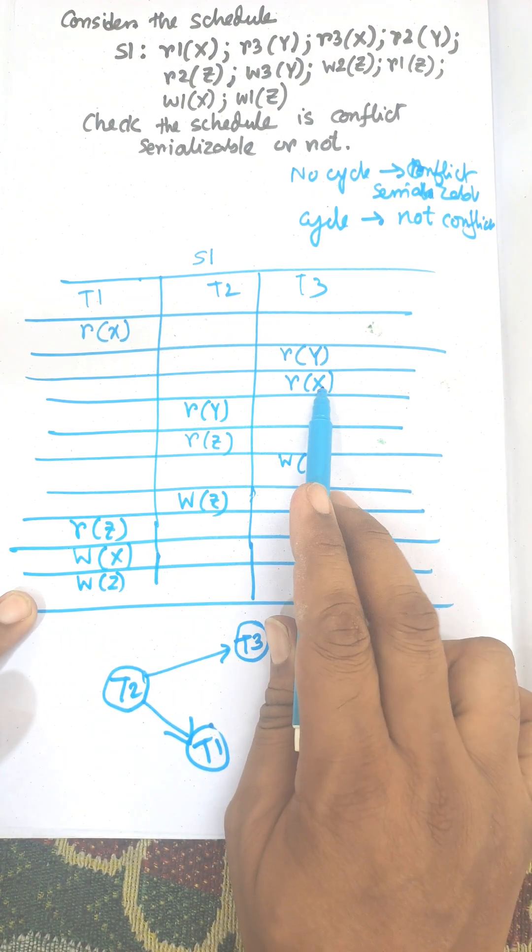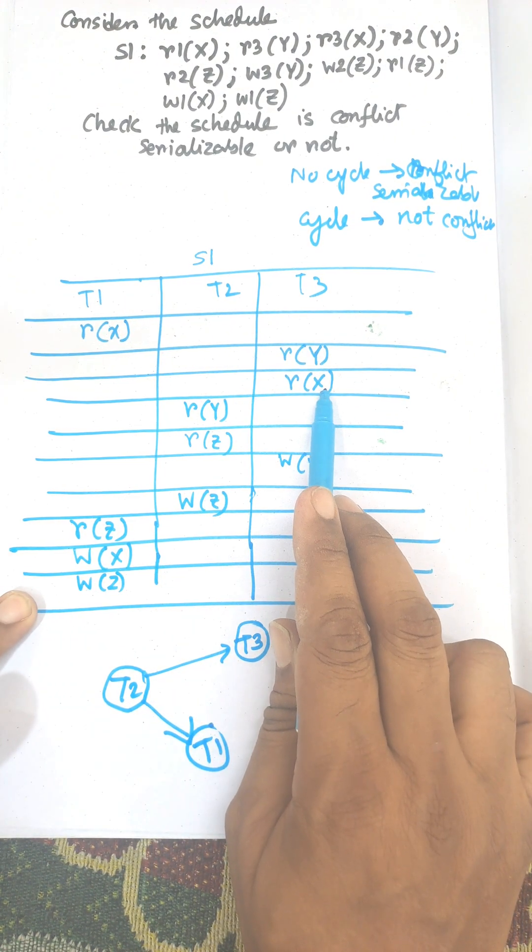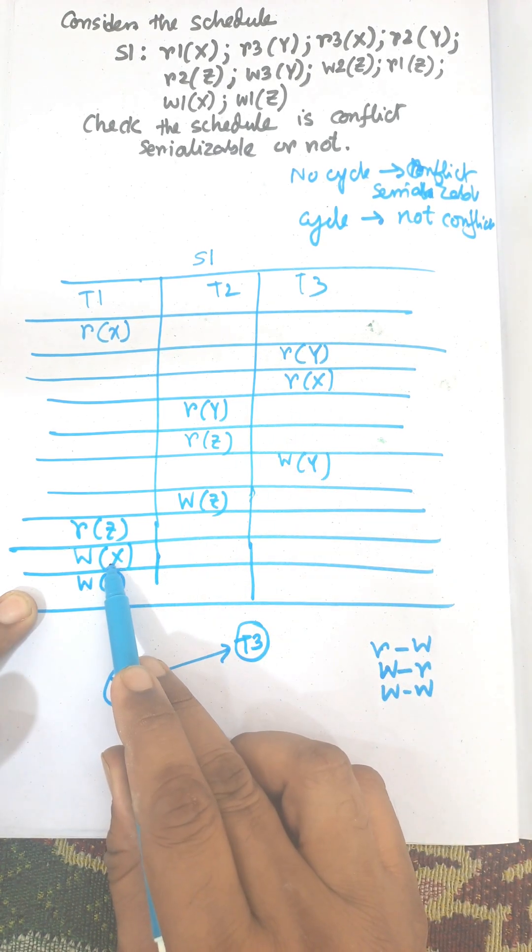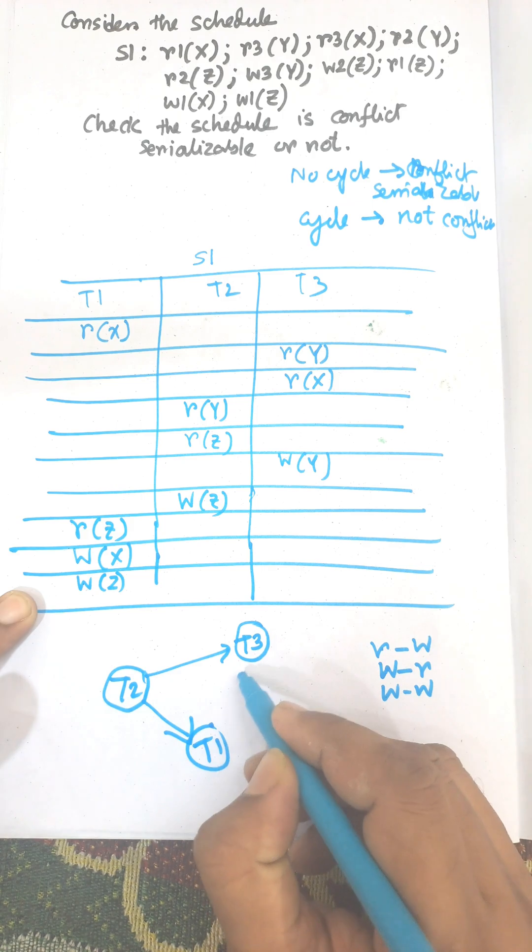Next, then here T3. This is write X read by T1. Mean read X read by T1. That is T3 to T1. T3 to T1.